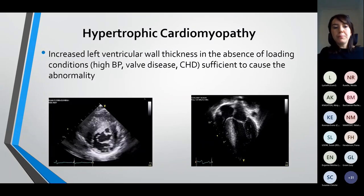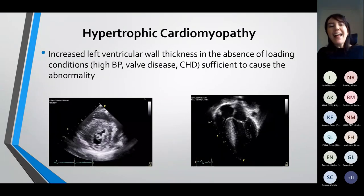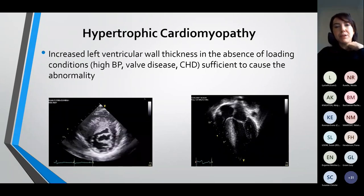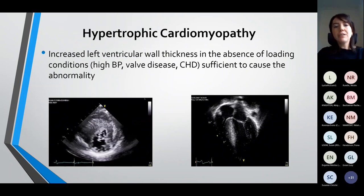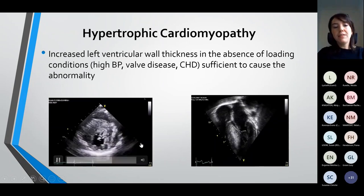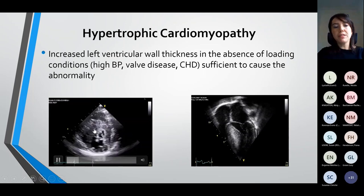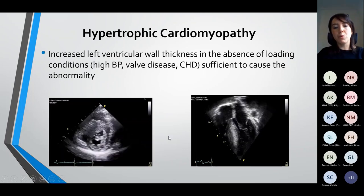Moving on now to hypertrophic cardiomyopathy. This is increased left ventricular wall thickness in the absence of loading conditions such as high blood pressure, valvular disease, or congenital heart disease. You can see in both of these images hypertrophic cardiomyopathy with an asymmetric morphology where the septum is much more hypertrophic than the lateral and inferior walls.